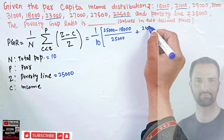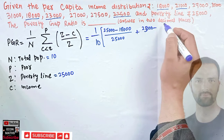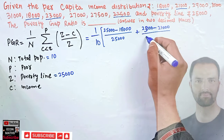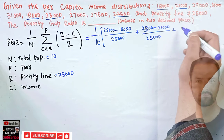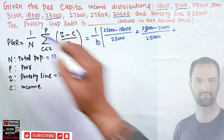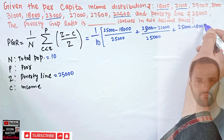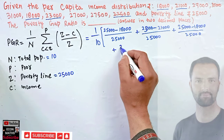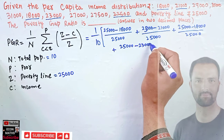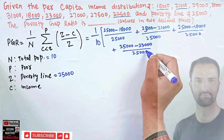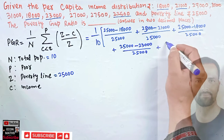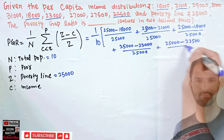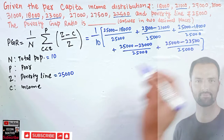Now we write out each term: (25,000 minus 18,000) over 25,000, plus (25,000 minus 21,000) over 25,000, plus (25,000 minus 23,000) over 25,000, plus (25,000 minus 22,500) over 25,000. We use the formula z minus c over z for each of the five poor individuals.